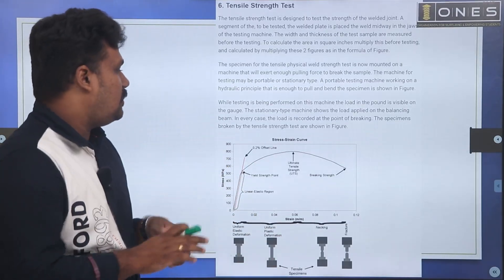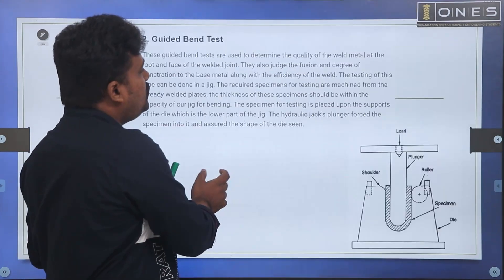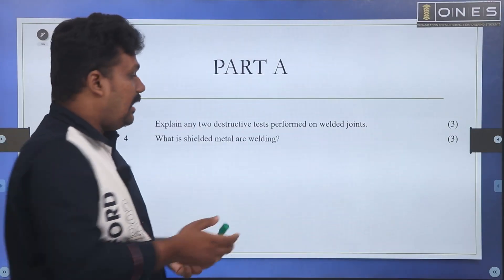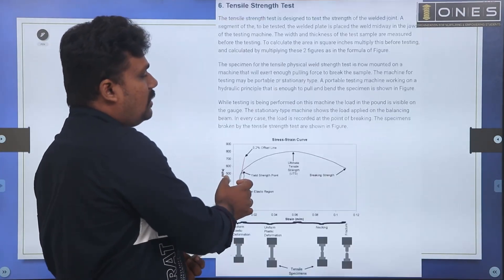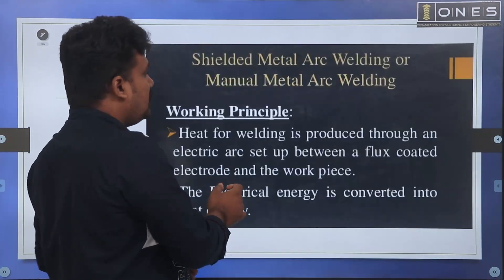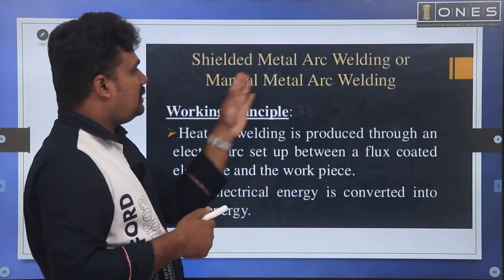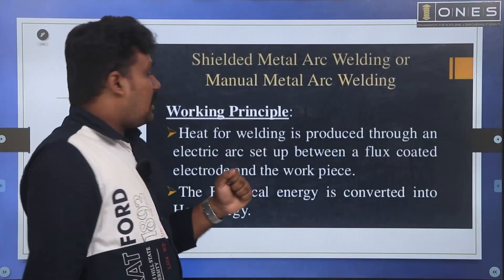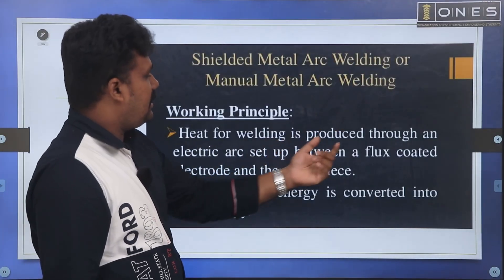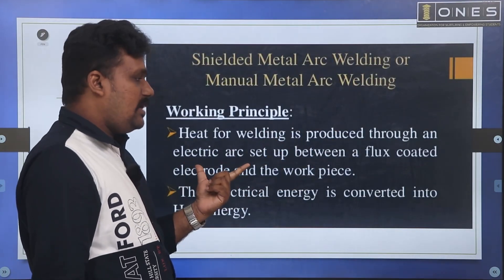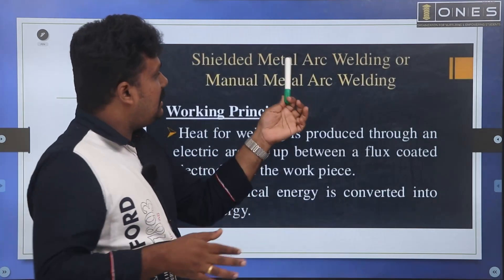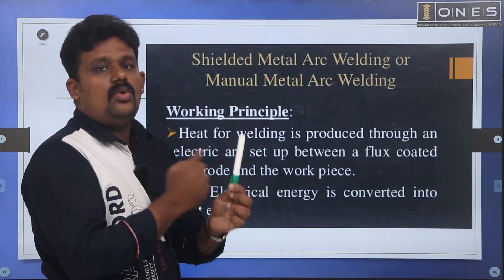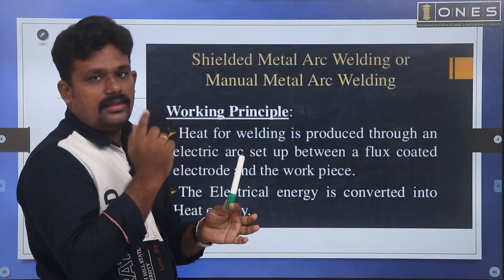Let's try one more question. What is shielded metal arc welding? If you want to form arc welding, one of the types is shielded metal arc welding. It is a manual metal arc welding. Heating of the weld is produced through an electric arc. In shielded metal arc welding, the electrode is coated.